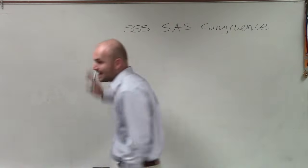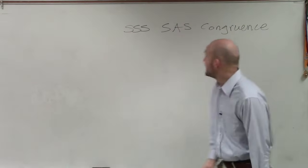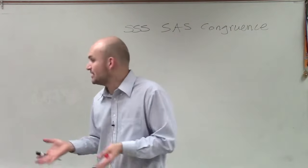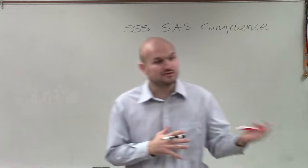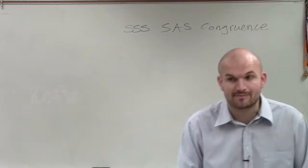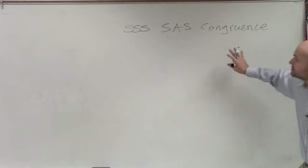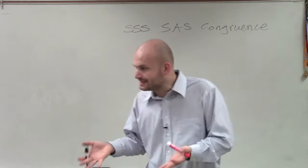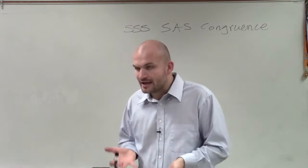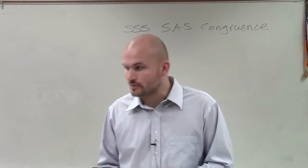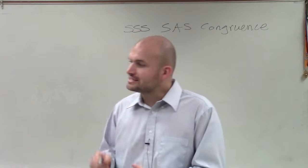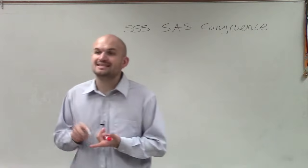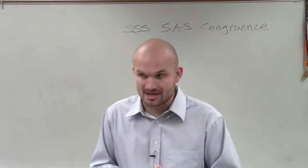So what we're going to be working on is SSS and SAS congruence. We talked about when we have two angles that are congruent, that means they have the same measure. And when we have two line segments that are equal measure, those have the same line segment. So what we're going to do for this one is now we want to be able to show that two triangles are congruent. And if two triangles are congruent, that means their angle measure is exactly the same, and the lengths of their sides are exactly the same.